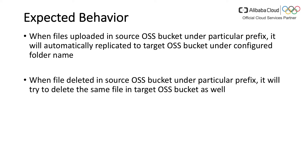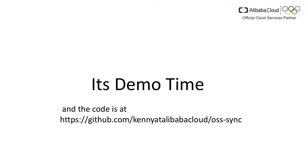After deploying those functions, here is the expected behavior. When a file is uploaded to the source bucket under a particular prefix, it will automatically replicate to the target OSS bucket under the configured folder. Also, when a file is deleted from the source bucket with that particular prefix, it will delete the same file from the target bucket as well.